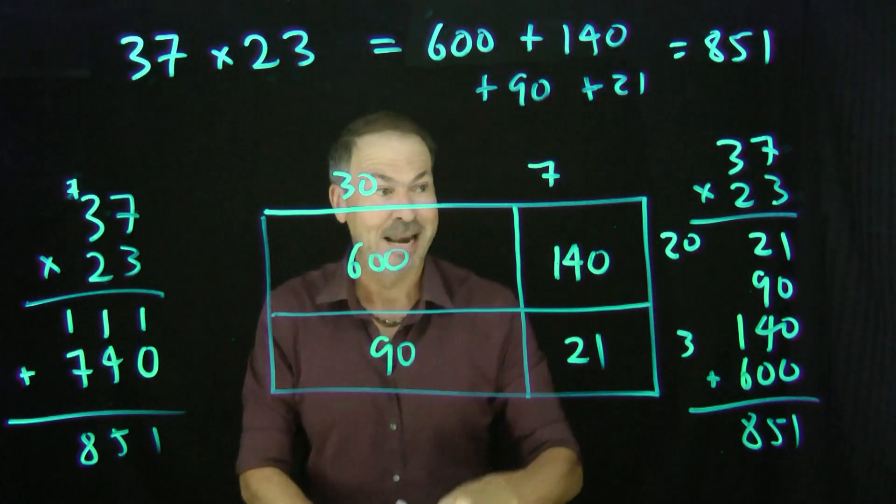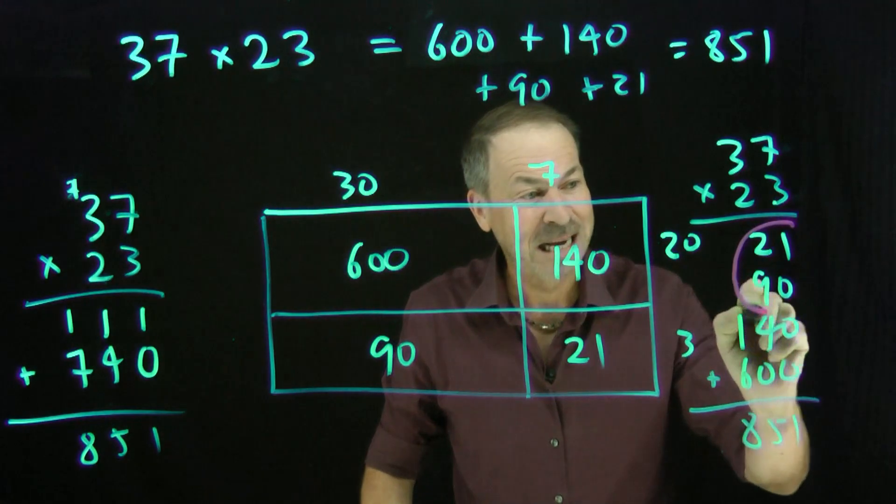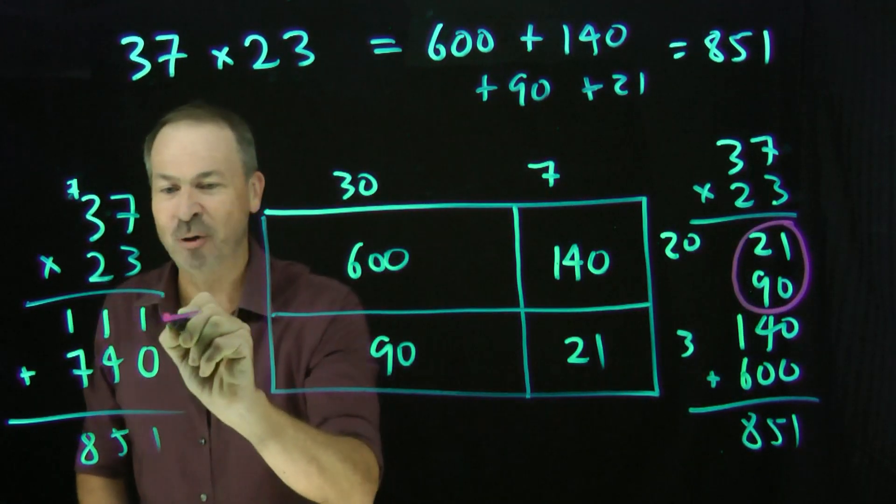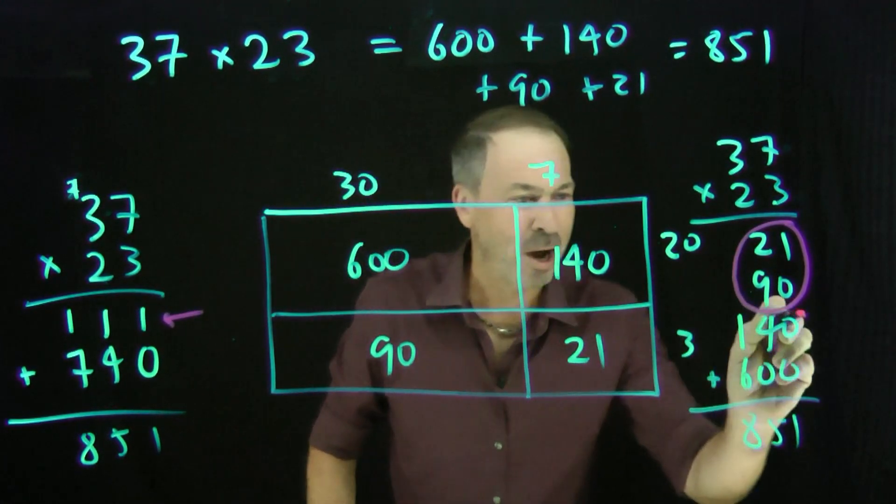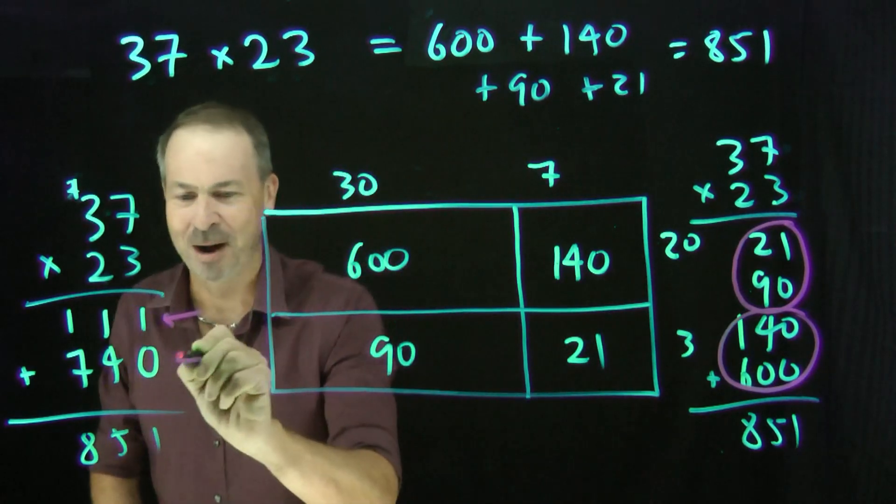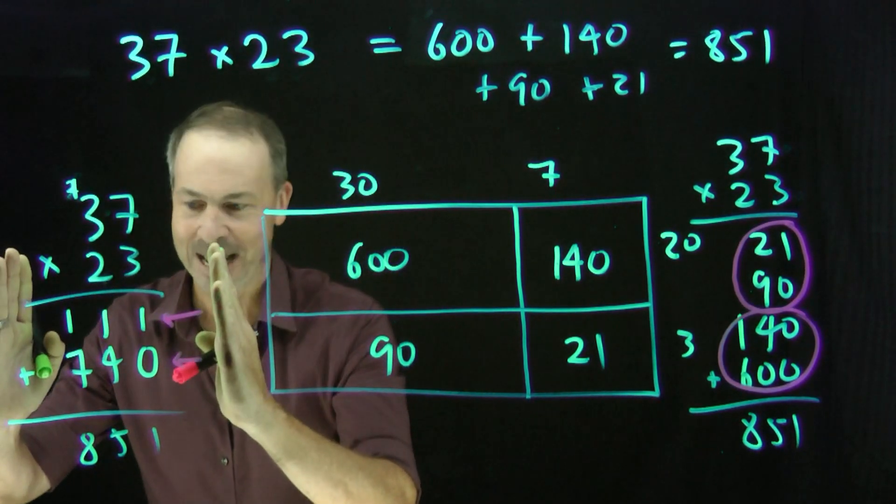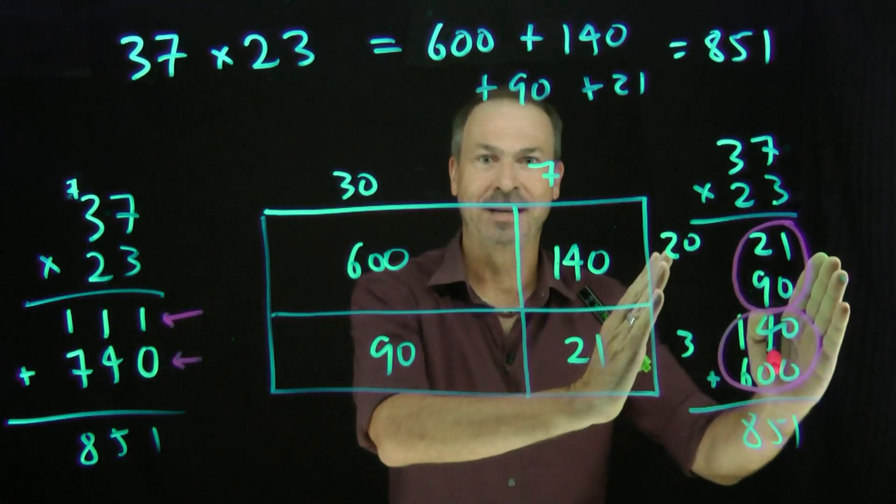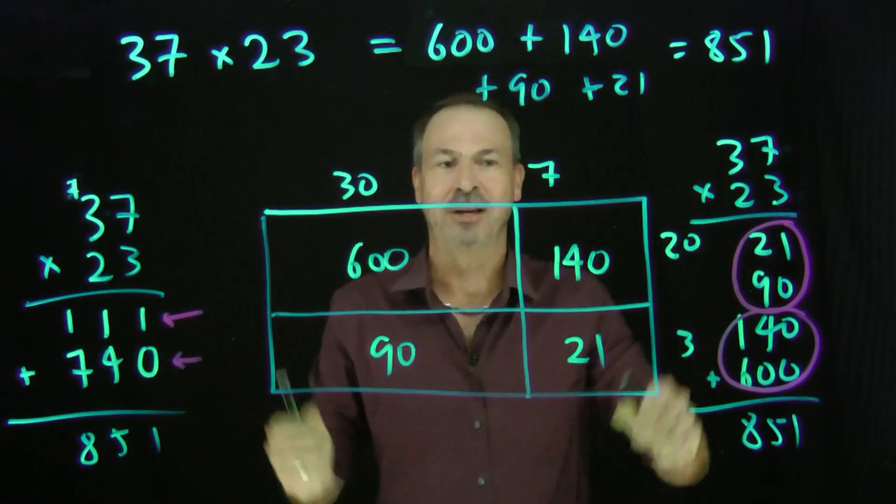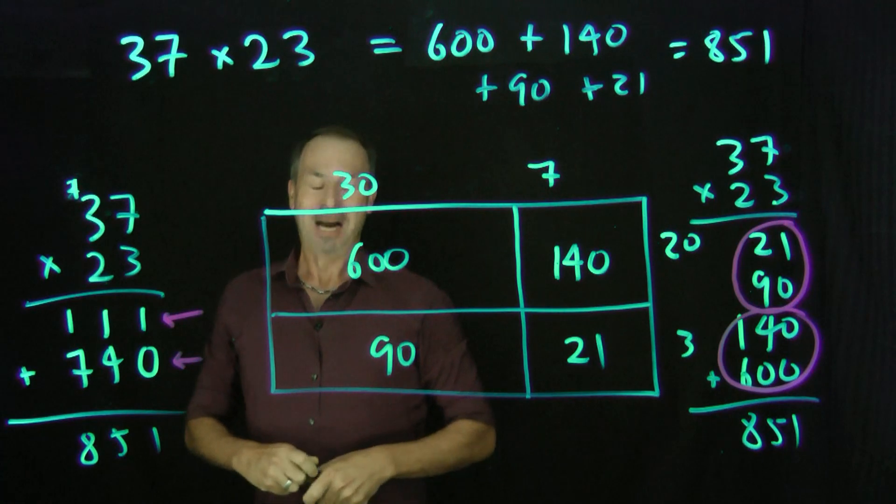And in fact you can see right now that this 90 and this 21 is this 111 combined. And this 140 and 600 is really combined to make that 740 right there. So actually this standard algorithm is doing all this in disguise. It's just compactified everything. It uses less ink.